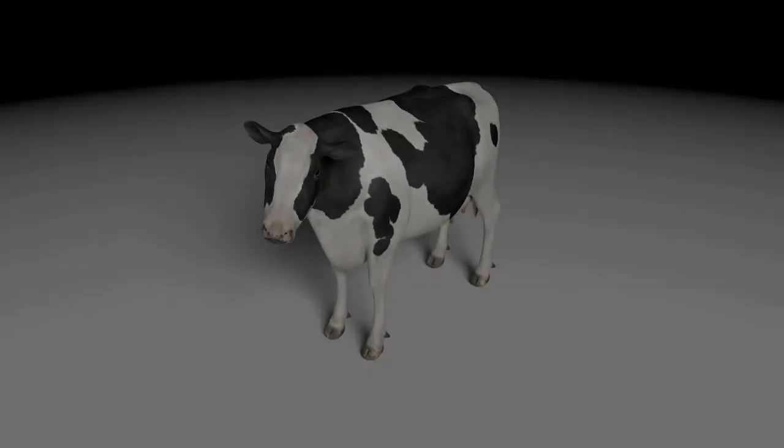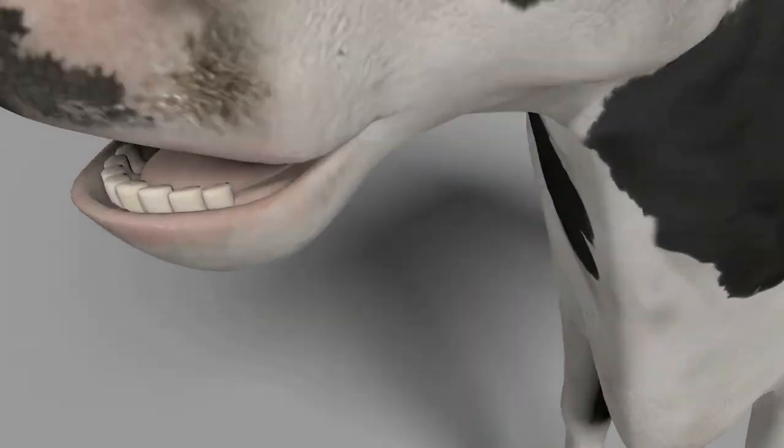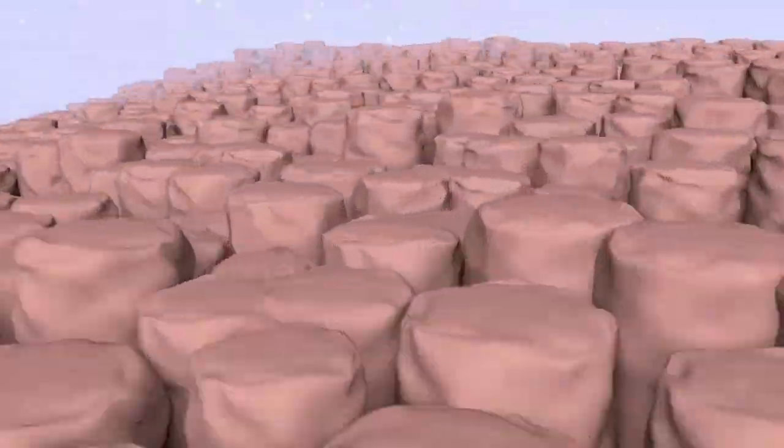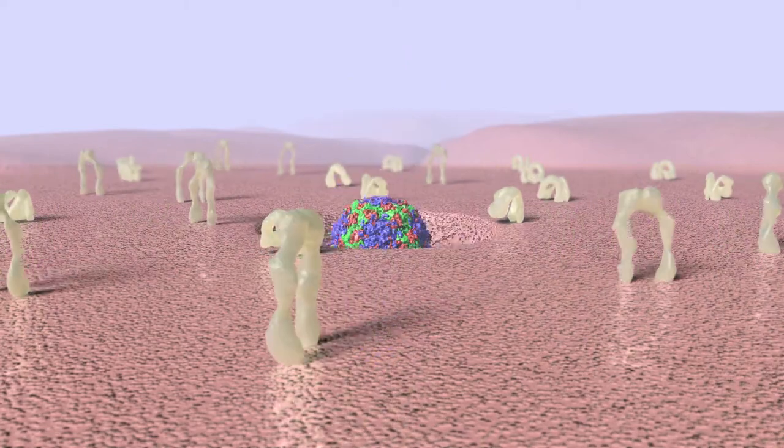So here we see the process of an infection of a cow. Here we see the cells on the surface of the tongue. There are specific molecules that grab the virus, take it into the cell.